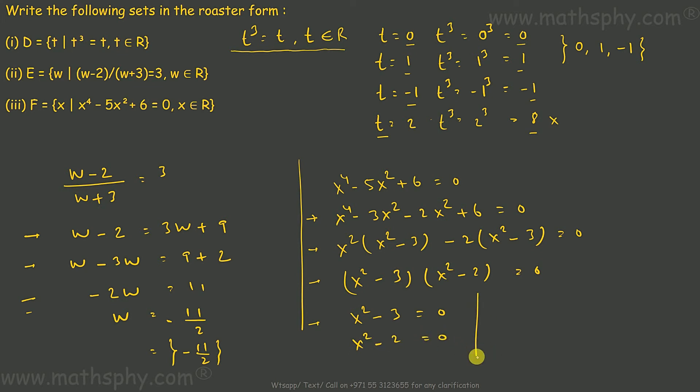So this will be x² equals 3, which means x equals root 3. So my elements can be root 3, negative root 3, root 2, and negative root 2. So these four can be elements for this set here.